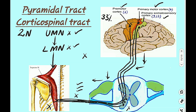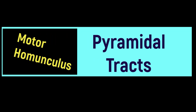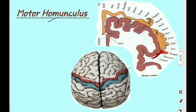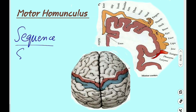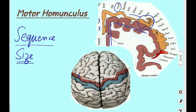Now, the motor homunculus — this is the representation of the body on the primary motor cortex, the precentral gyrus in the frontal lobe. The sequence of body parts: over the medial surface we have the foot and lower limb; then over the superolateral surface comes the trunk, upper limb, hand, and face. Close to the lateral sulcus, over the superolateral surface, we have the representation of the tongue, pharynx, and larynx.